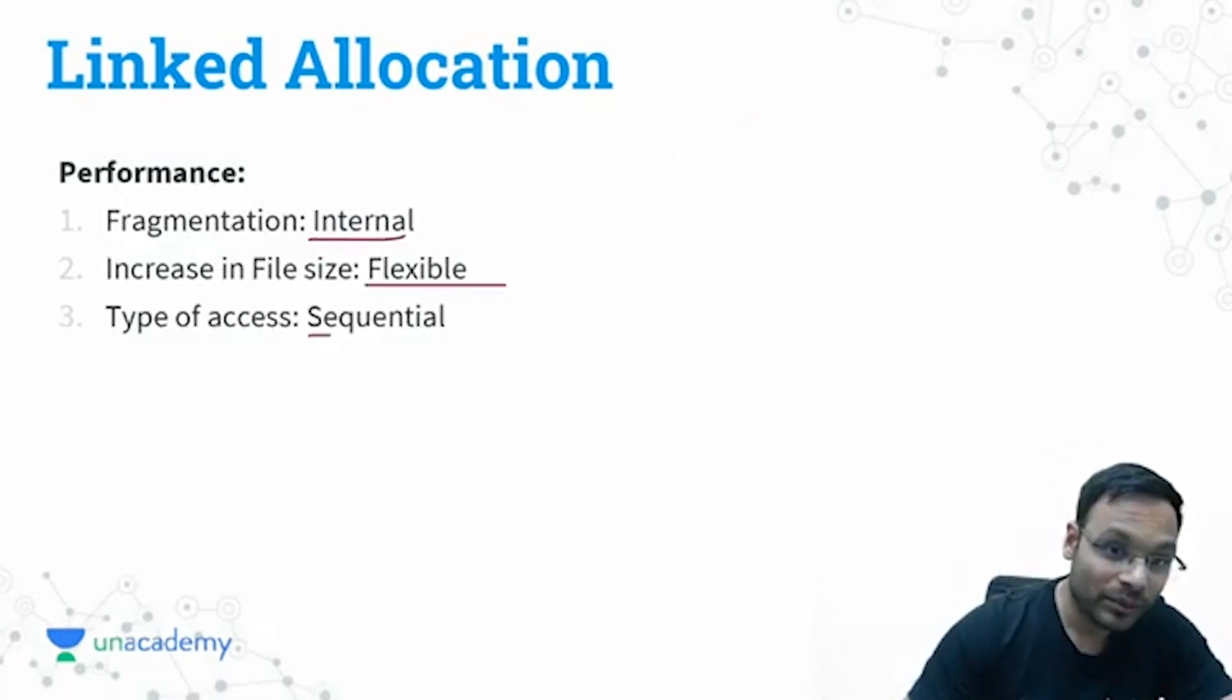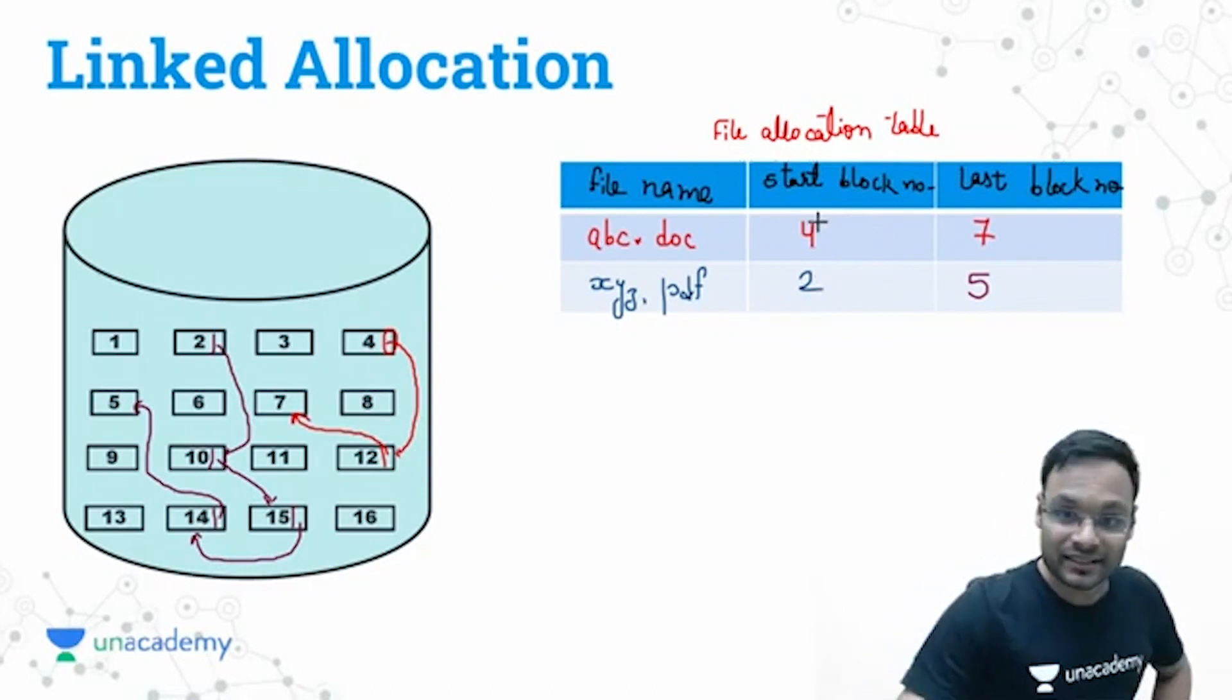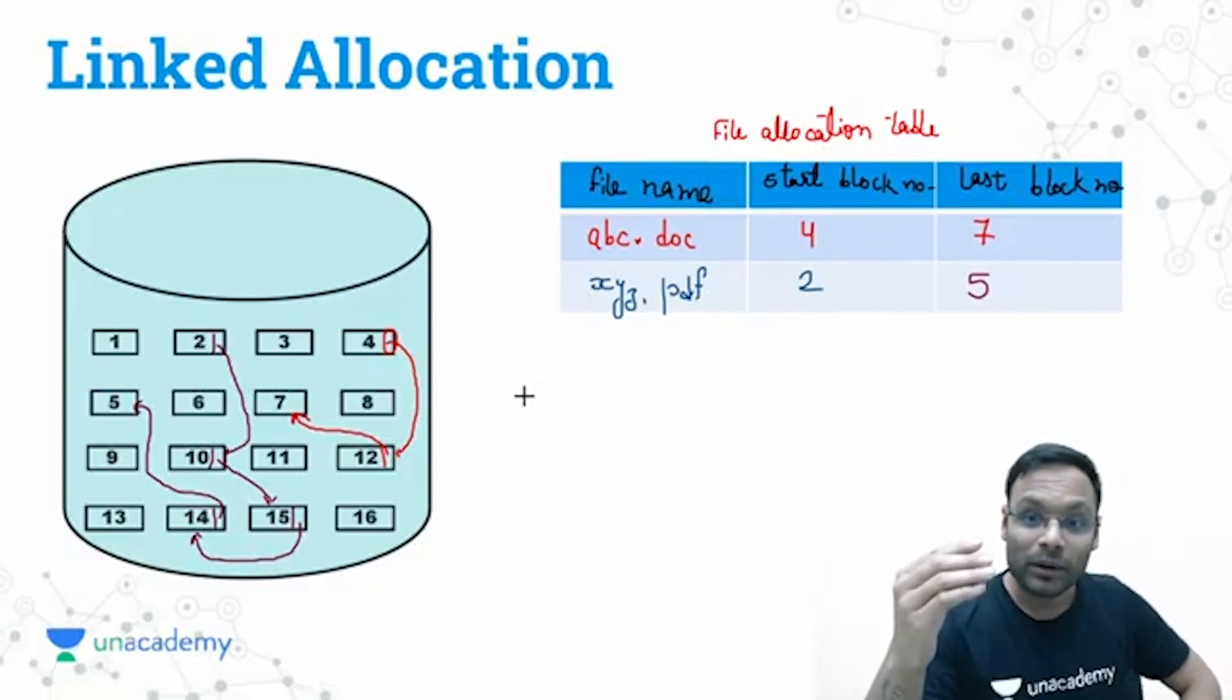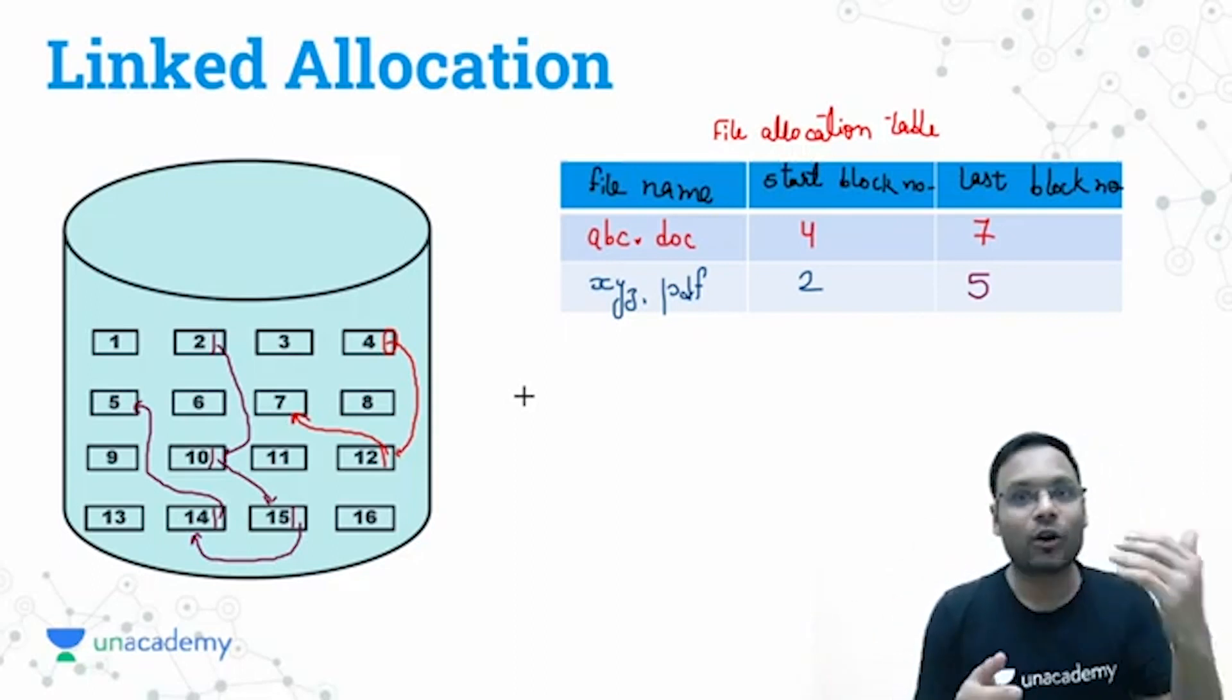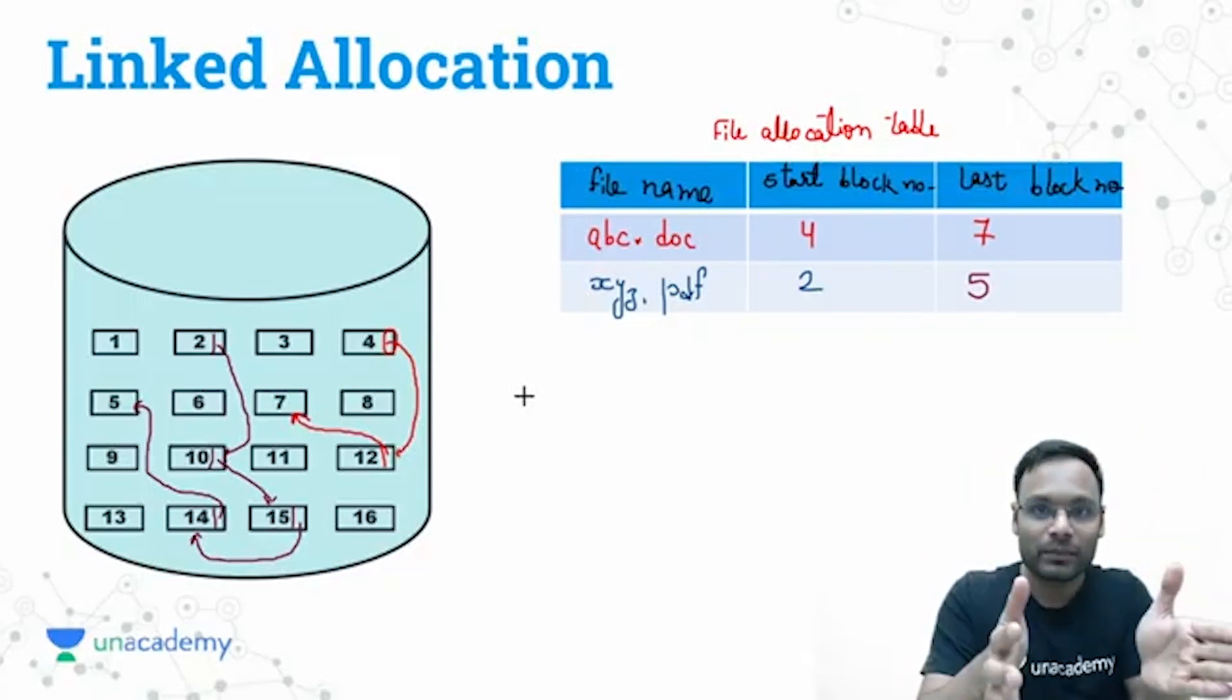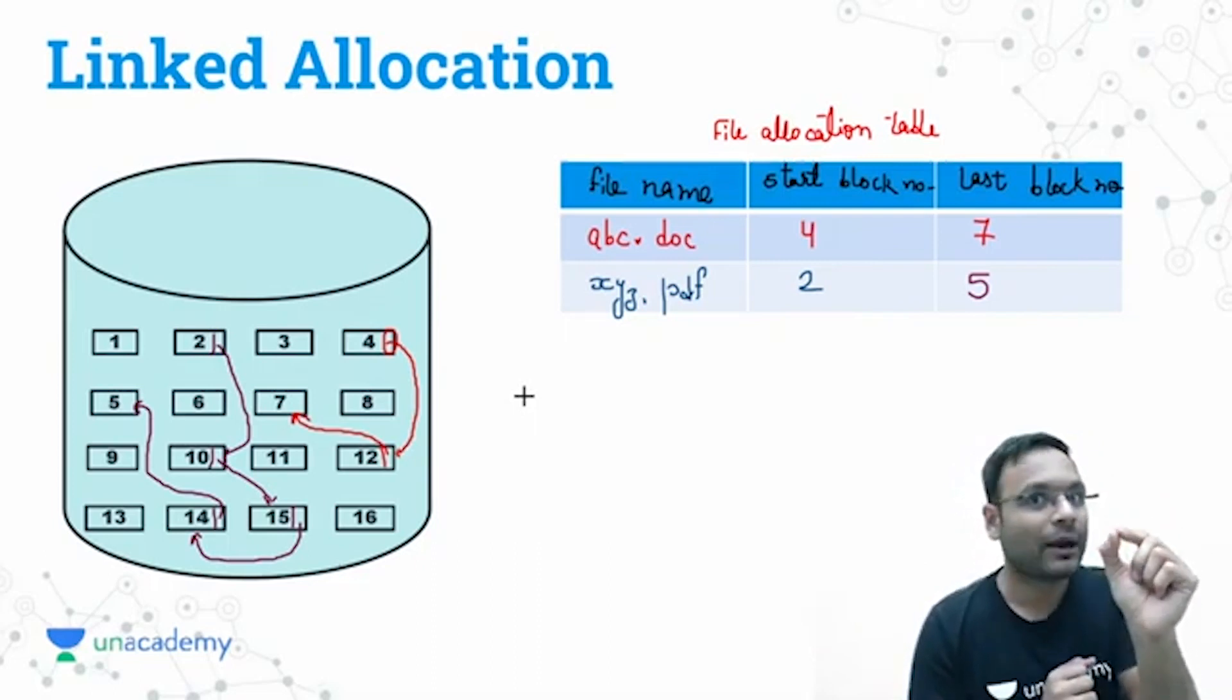But the biggest problem here is we can have only sequential access. Why? If through this particular table I give the information and I ask xyz.pdf is starting from block number two, give me the fourth block of this file, you don't know. You cannot directly get the fourth block of this file. Why? Just because block number two says start, okay, from starting from block number two if you will have to access fourth block you cannot jump to fourth block. Which number is fourth block of the file you don't know. You will have to go sequentially from 2 to 10, 10 to 15, 15 to 14. 14th number is fourth block of your file, you cannot access it directly. Sequentially block by block only you will have to access.